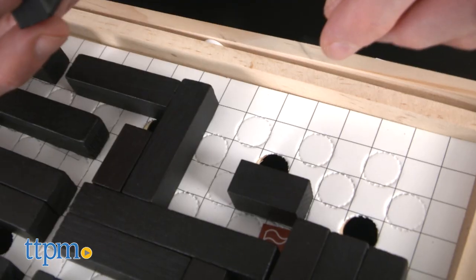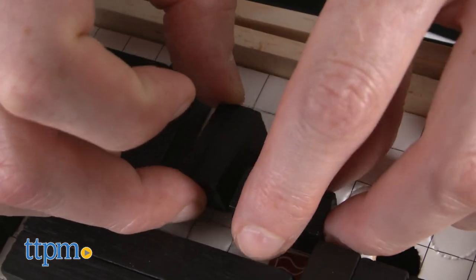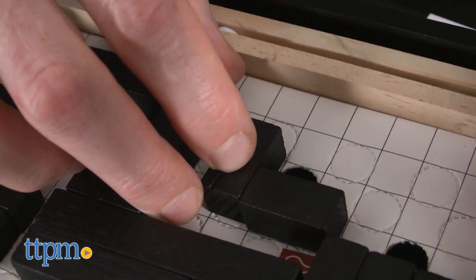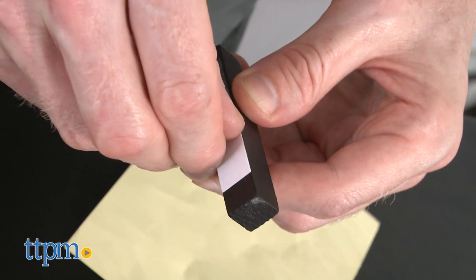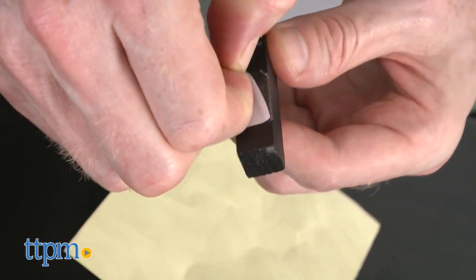Then the real strategy, creativity, and fun begins. Design your maze by placing the wall blocks along the path. There are three different sized walls and they are fixed by using the adhesive stickers.